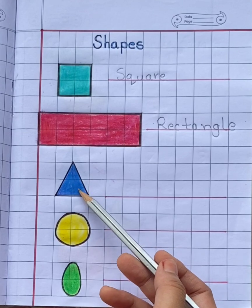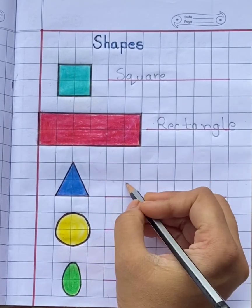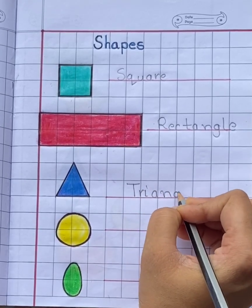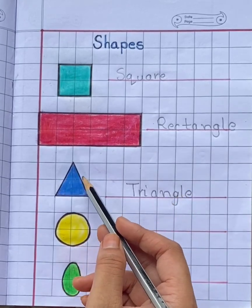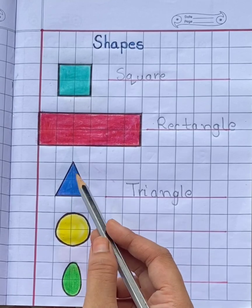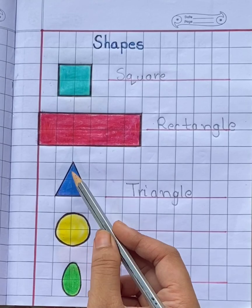Next one, triangle. T-R-I-A-N-G-L-E. Triangle has three sides: one, two, three, and three corners. How many corners? Three corners.